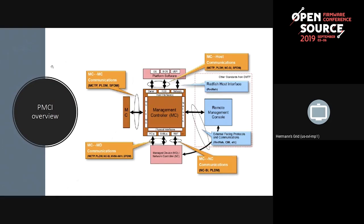On this picture, you actually see four kind of components, and PMCI deals with intercommunications between these four components. There's the BMC at the center. There's also the platform software on top, which is basically firmware running on the host CPU — it typically talks to the BMC using physical interfaces like KCS or serial-based interfaces, and it talks to the BMC to accomplish some kind of management functions. There are managed devices, which are typically connected to the BMC over SMBUS or PCI, and those devices respond to management-based requests from the BMC.